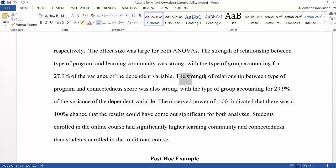What the ANOVAs, what those numbers actually mean is the strength of the relationship between the type of program and connectedness scores was strong at 29.9%.